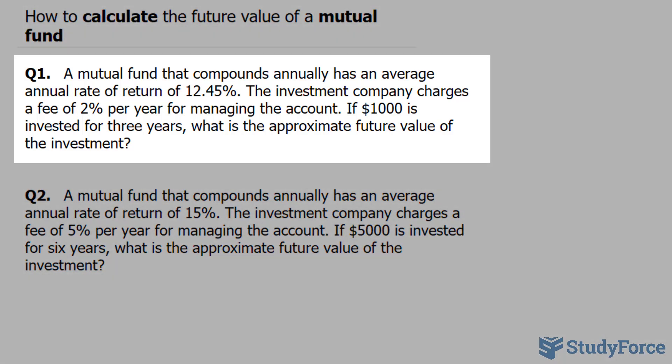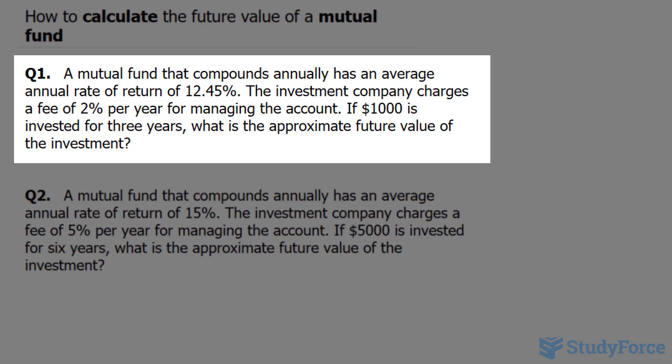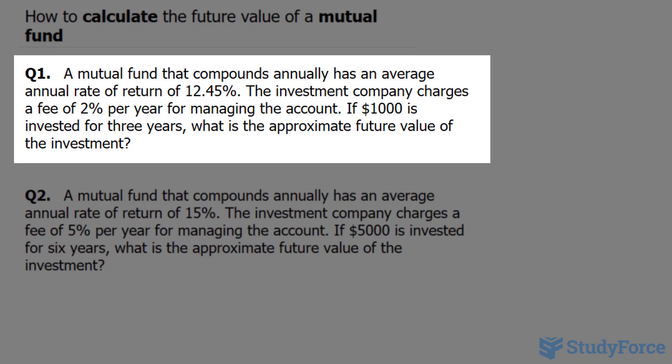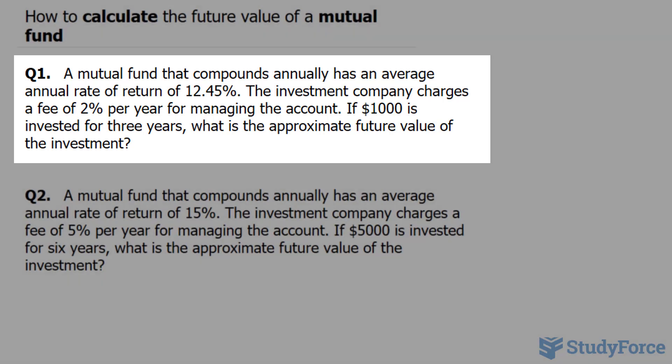The first question reads: a mutual fund that compounds annually has an average annual rate of return of 12.45%. The investment company charges a fee of 2% per year for managing the account. If $1,000 is invested for three years, what is the approximate future value of the investment?